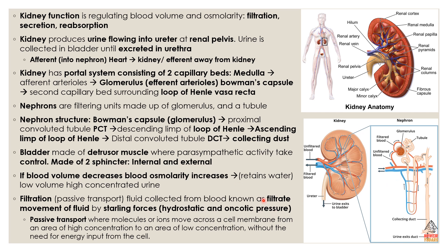The bladder is where urine is stored, and it's made up of detrusor muscles where parasympathetic activity takes control. It's made of two sphincters — internal and external — which are significant in controlling what goes in and out. We also spoke about sphincters in the digestive system.